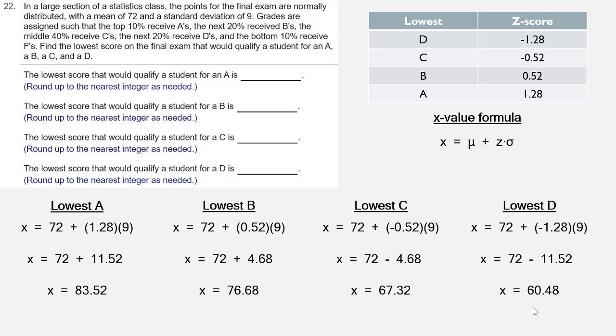The question asks to round up to the nearest integer. So not to round, but to round up. So we're going to go to the next highest value from each one of these. For the lowest A, 83.52 would become 84. For the lowest B, 76.68 would be 77. For the lowest C, 67.32 would be 68. And for the lowest D, 60.48 would be 61. Those are your lowest scores. That's your answer.